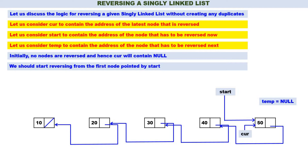Now let us reverse 50. The address part of 50 should contain the address of node 40 — that is, start->next is equal to curr. What is the recent node reversed? 50. Therefore curr should contain the address of 50 — curr is equal to start. There are no more nodes to reverse, therefore start also becomes null. When start becomes null, the linked list is reversed and curr is containing the address of the linked list. You can observe: curr contains 50, 50 contains 40, 40 contains 30, 30 contains 20, 20 contains 10, and 10's address part is null. The linked list is now 50, 40, 30, 20, 10 — initially it was 10, 20, 30, 40, 50. We have reversed it.